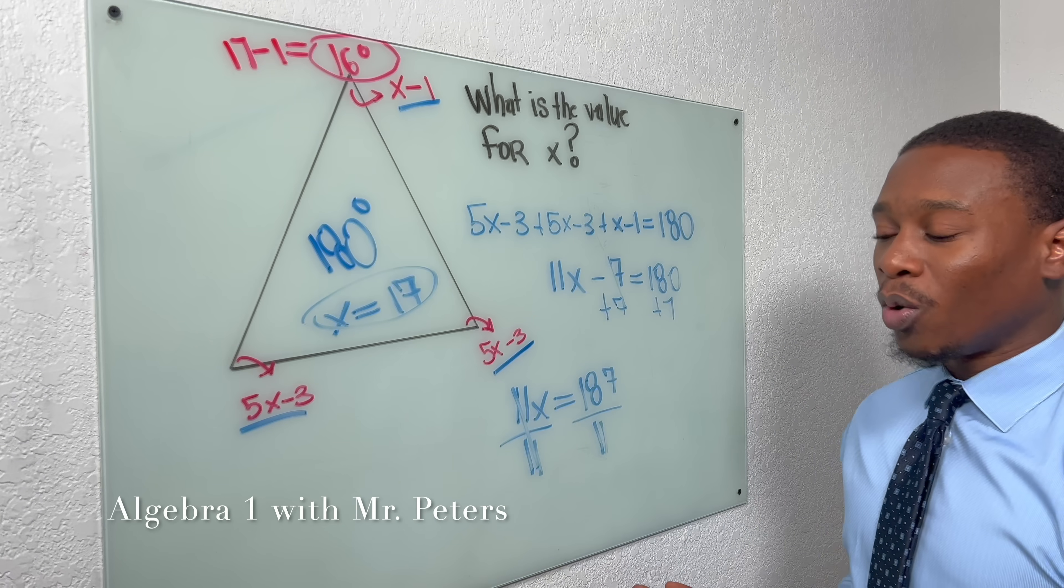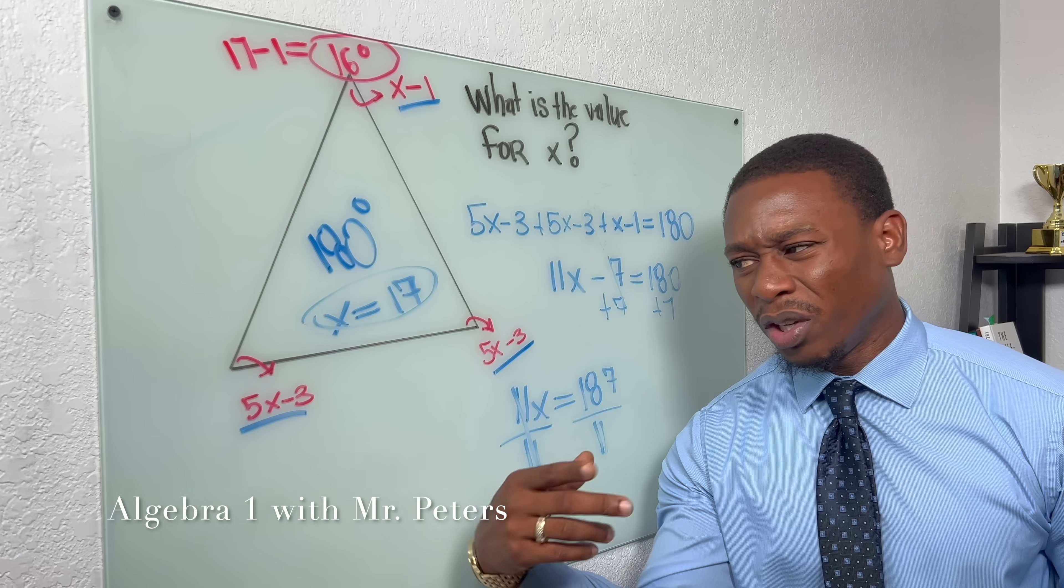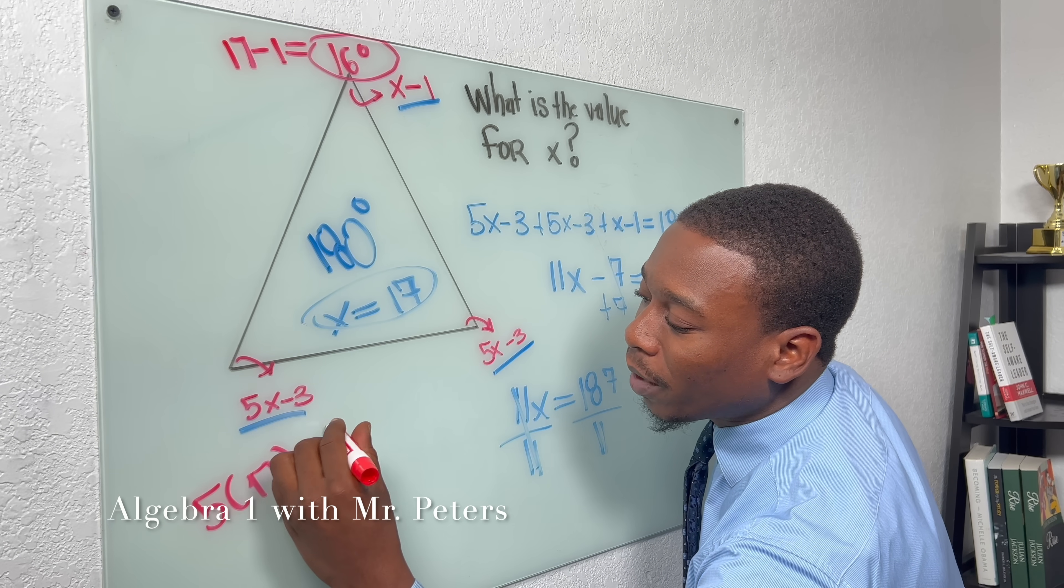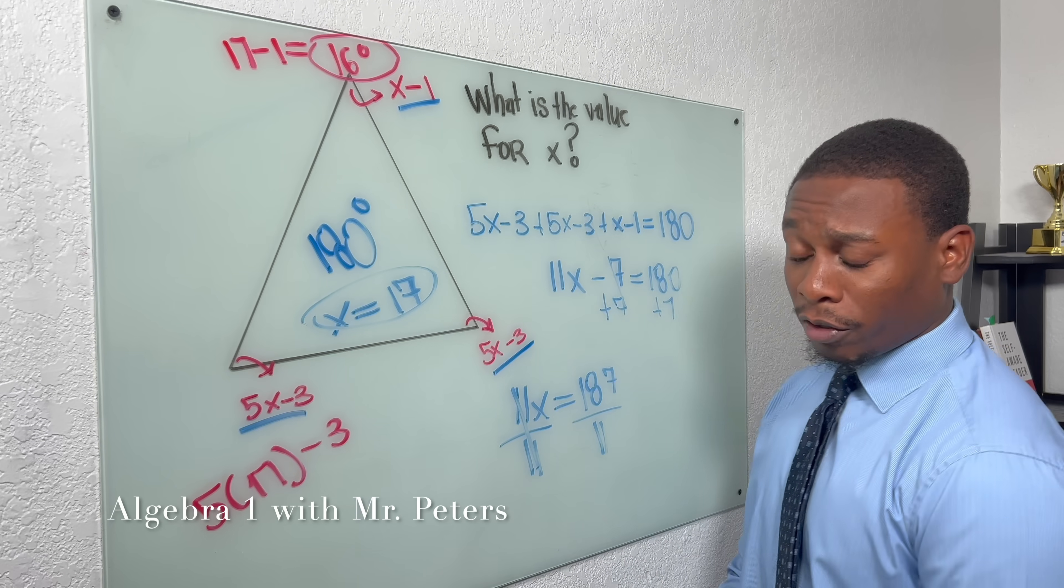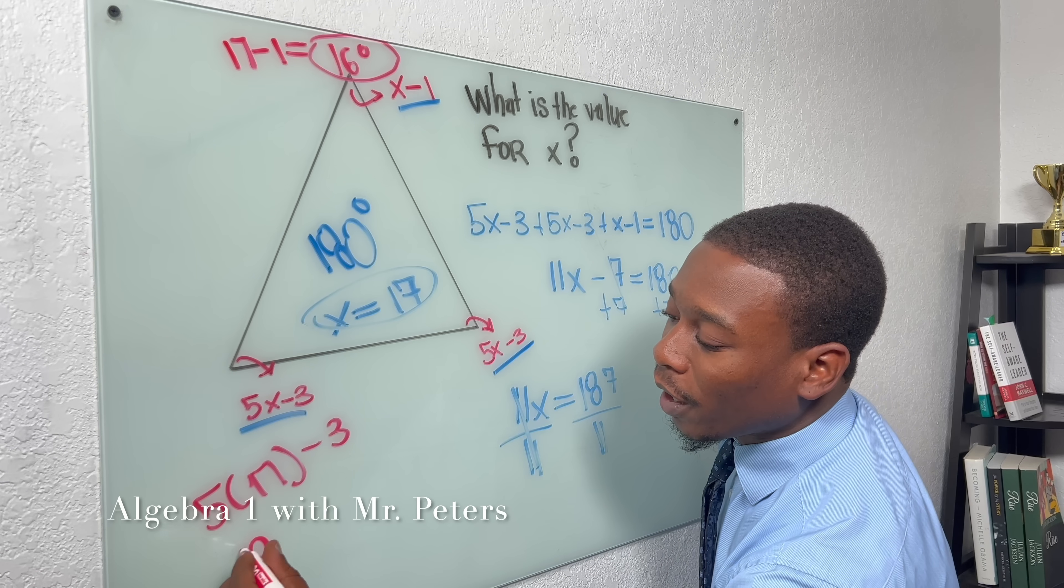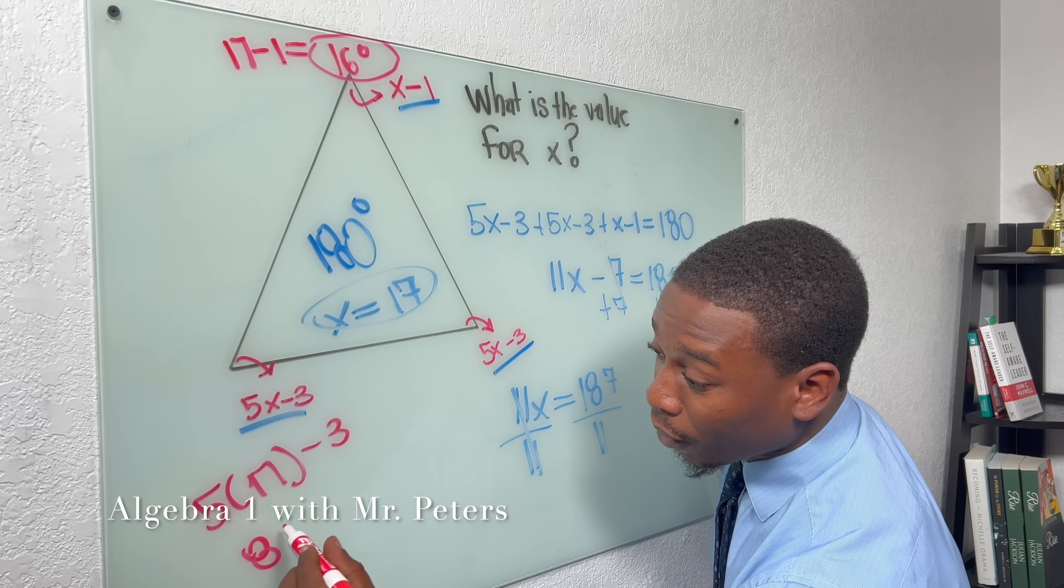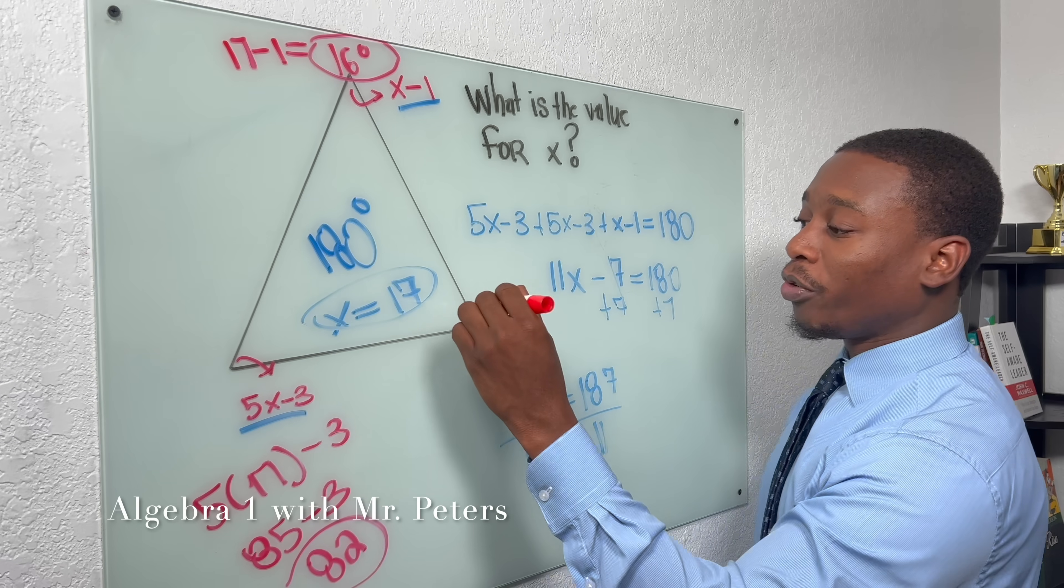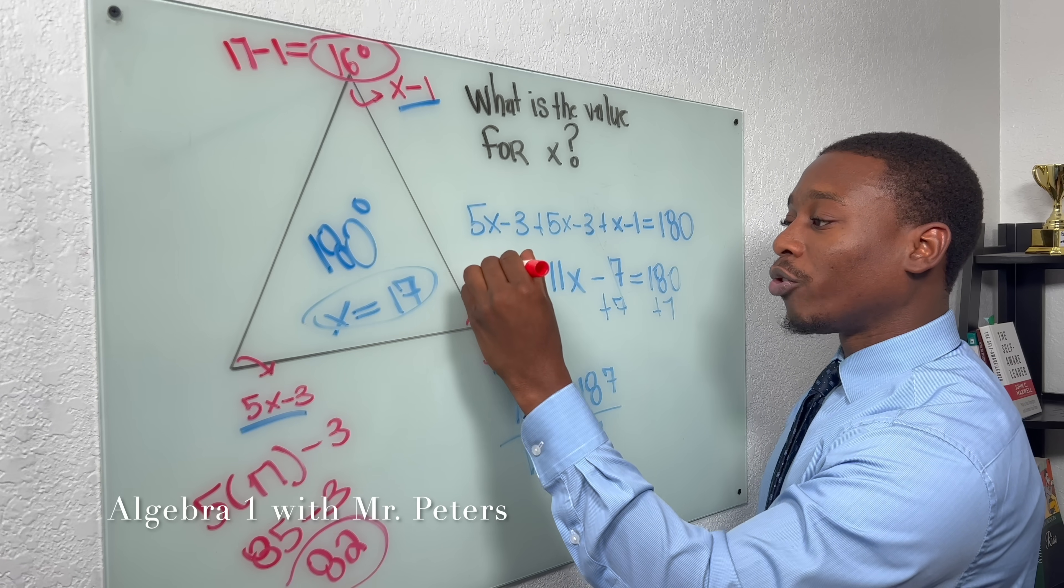Now there's two ways we could go ahead and find the angle for these two. We could plug it in, right? 5 times 17 minus 3. Take out my calculator for today. Let's see. We're going to get 85 minus 3. So we know that these two angles are both going to be 82 degrees.